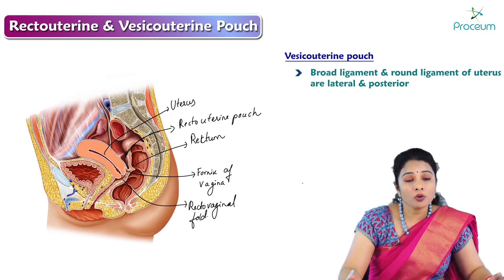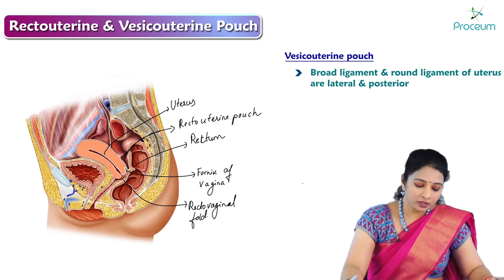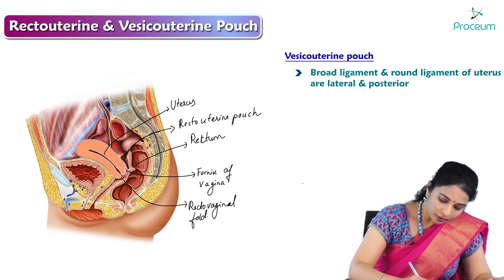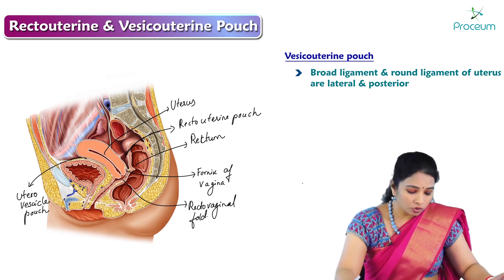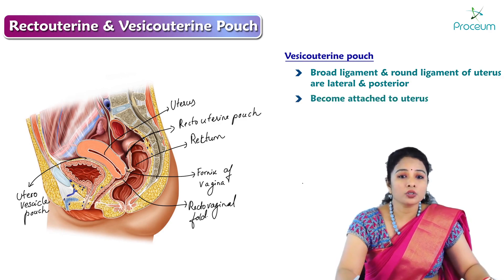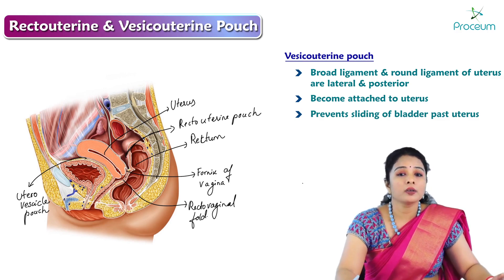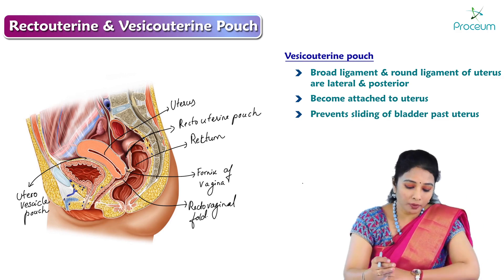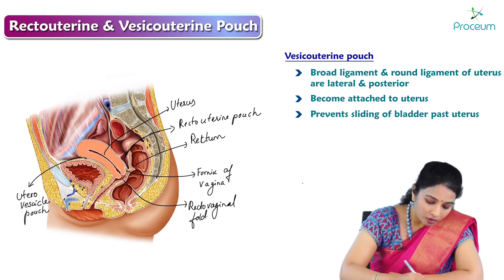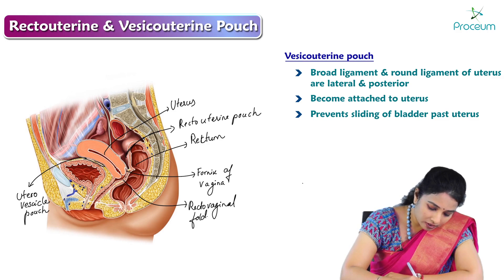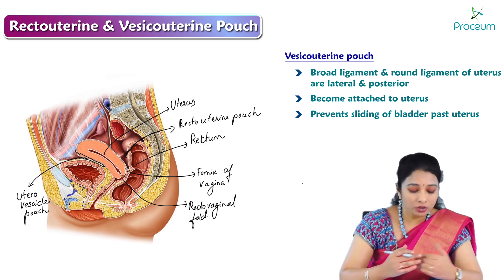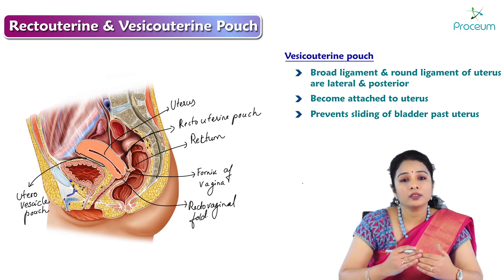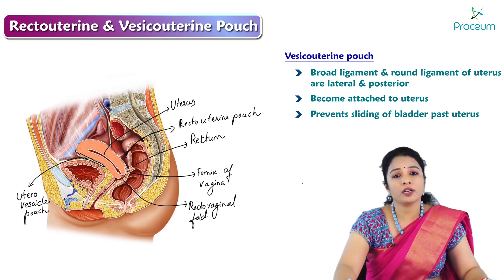The broad ligament and the round ligament of the uterus are lateral and posterior to the space. The gap between the urinary bladder and the uterus is called the vesico uterine pouch. This pouch is not as prominent as the recto uterine pouch because the peritoneal reflections make this pouch very small, as the uterus becomes almost adherent to the urinary bladder, preventing the sliding of the urinary bladder past the uterus.